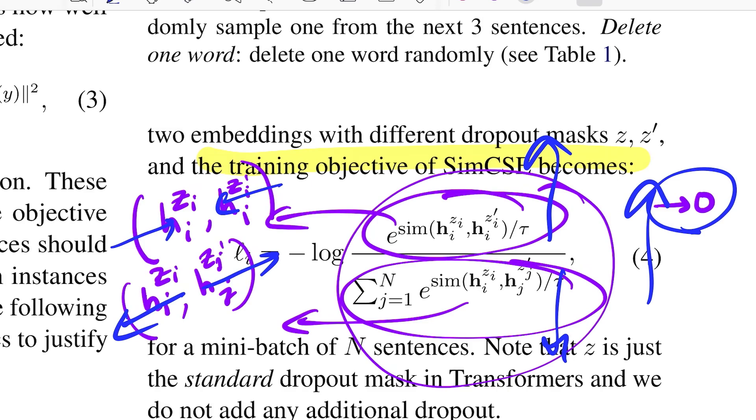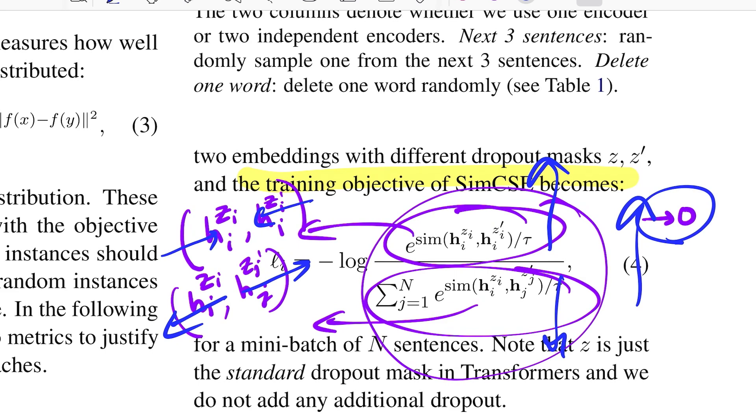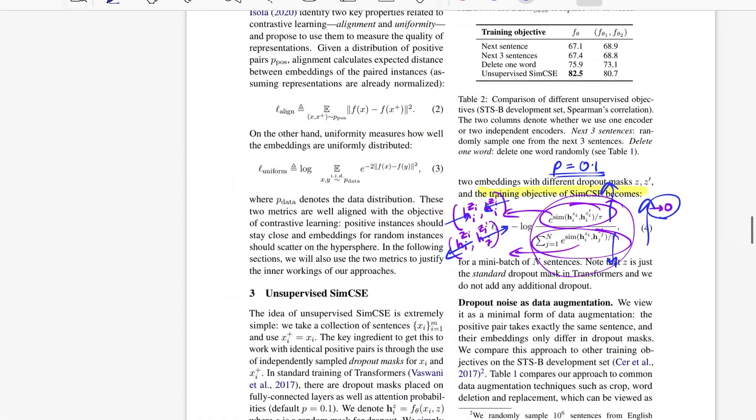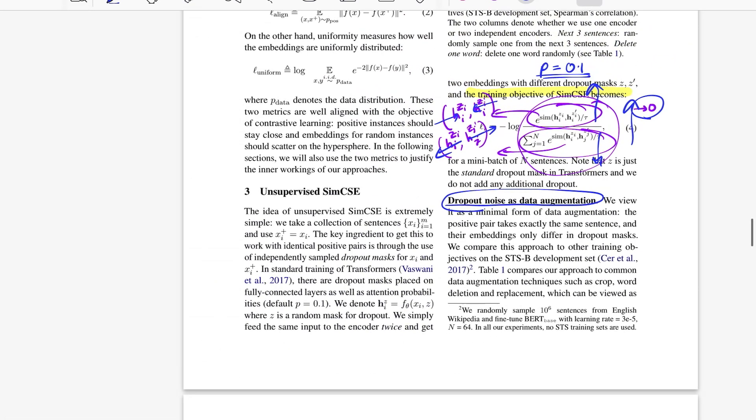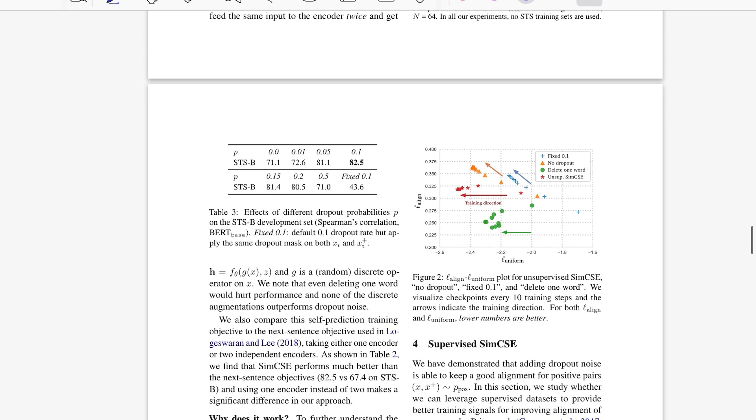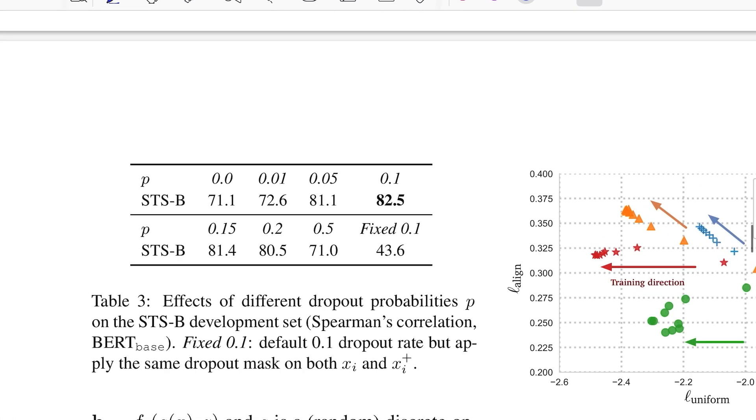In the standard transformers training, the dropout probability, which is p is set to 0.1, which is 10% of the random units are masked and are not used at any given iteration. This is same as thinking about dropout noise as a data augmentation for learning the sentence embeddings. They do experiment with various dropout probabilities ranging from 0 to 0.5 to fixed 0.1.